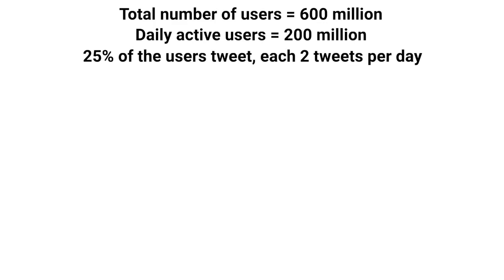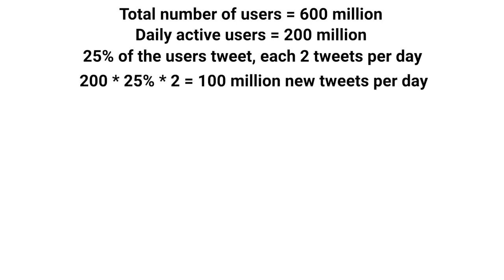If we consider that 25% of users tweet and they make two tweets per day on average, then the total number of new tweets per day will be: 200 million (daily active users) × 25% (only those who actually create tweets) × 2 (tweets per user per day) = 100 million tweets per day. So we have 100 million new tweets on a daily basis.